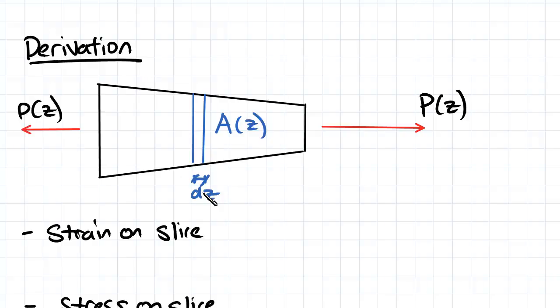So first, what's the strain on the slice? Well, the strain is going to be ε(z) in terms of the position z of that slice.